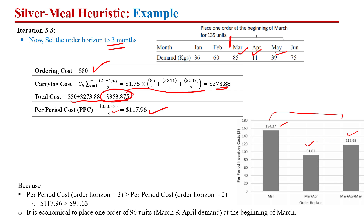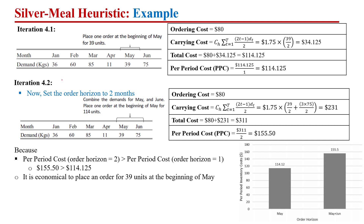The conclusion is: placing the order at the start of March to meet the demand of March and April (per period cost $91.63) is better than covering March only or March, April, and May. So at the end of iteration three, we decide to place the order at the start of March equal to the sum of March and April's demand. We have now solved the problem through April.